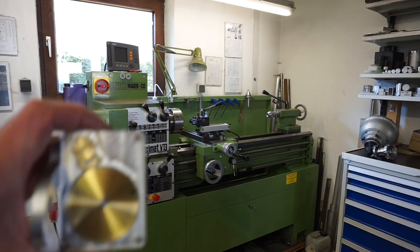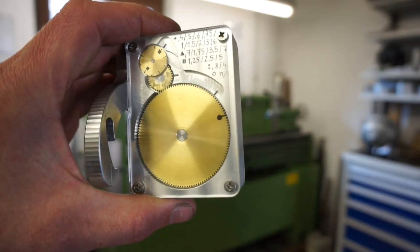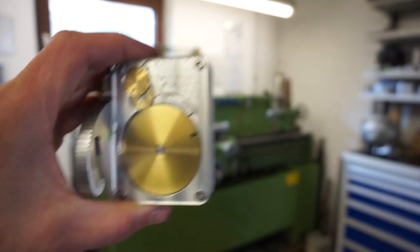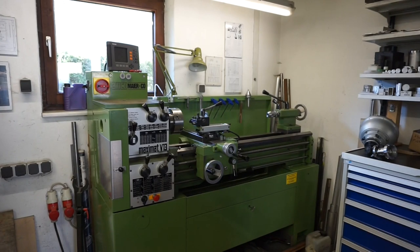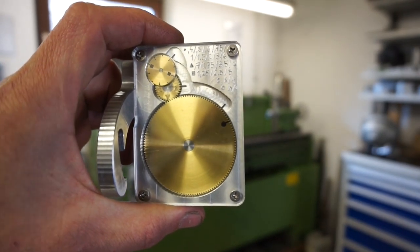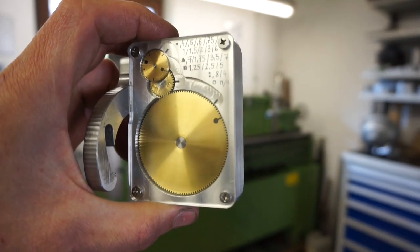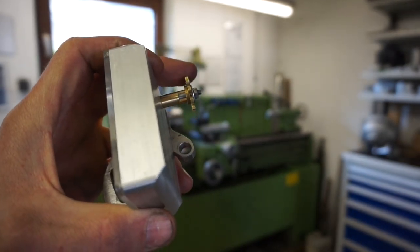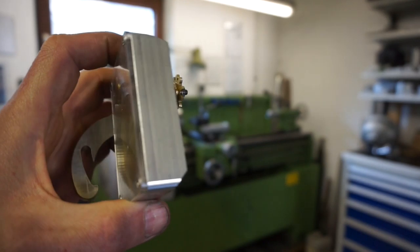In this video we will take a look at this extended threading dial indicator which I built for my Emco V13 lathe in order to speed up the thread cutting process. What's special about this indicator is that it works for both metric and imperial threads while it doesn't require any drive gear changes down here where the indicator meshes with the lead screw.